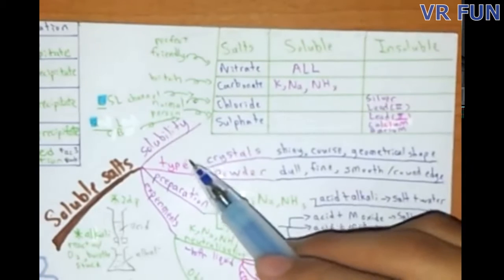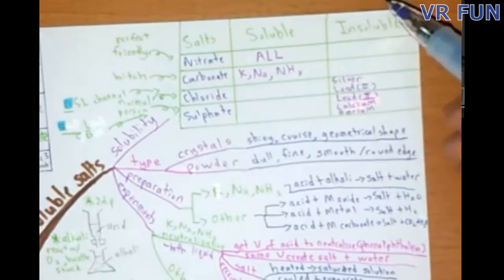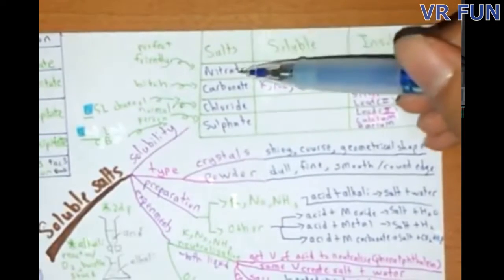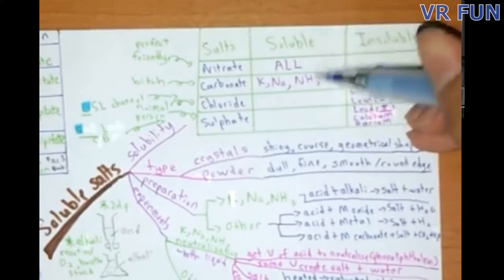Let's start off with solubility. You want to remember which salt is soluble and which salt are insoluble. All nitrate salts are very friendly and they are like perfect, so they are soluble in everything.